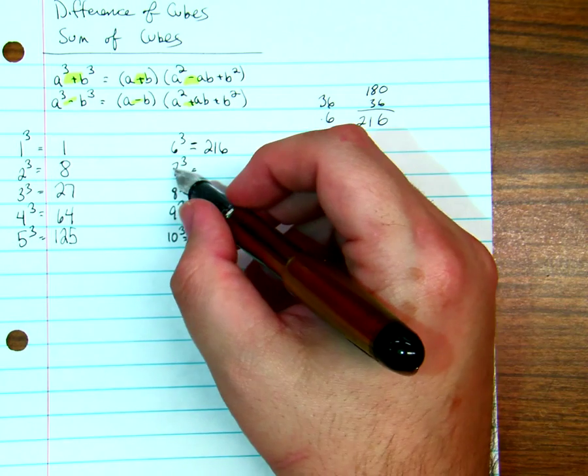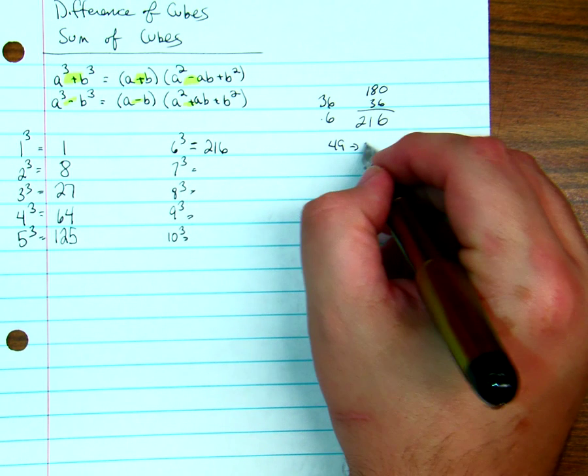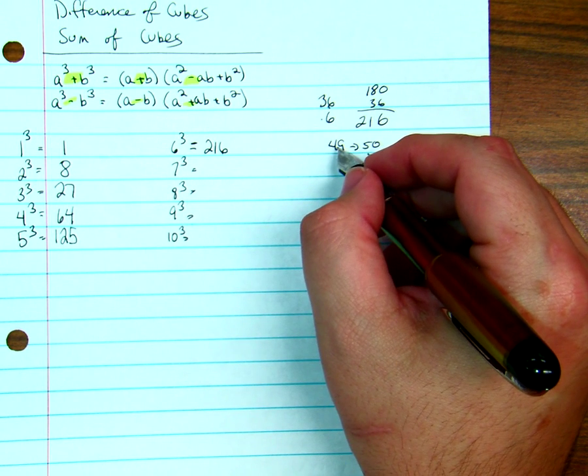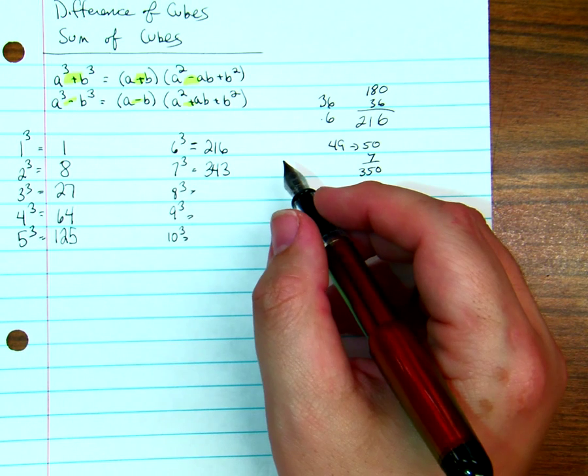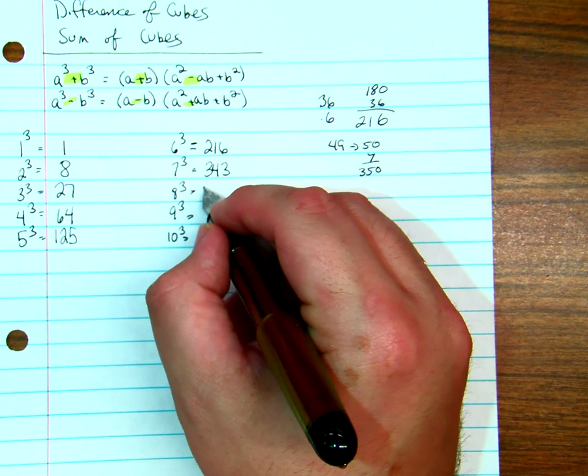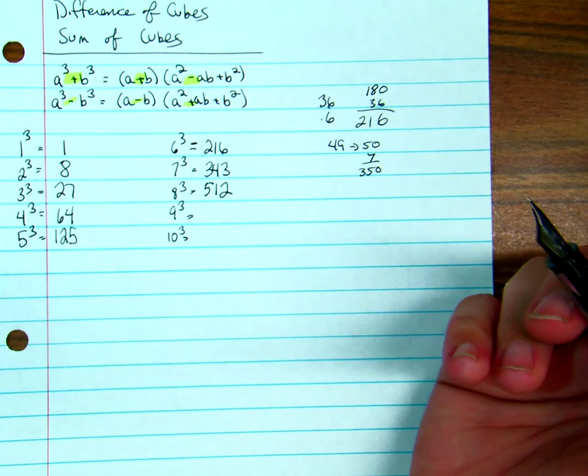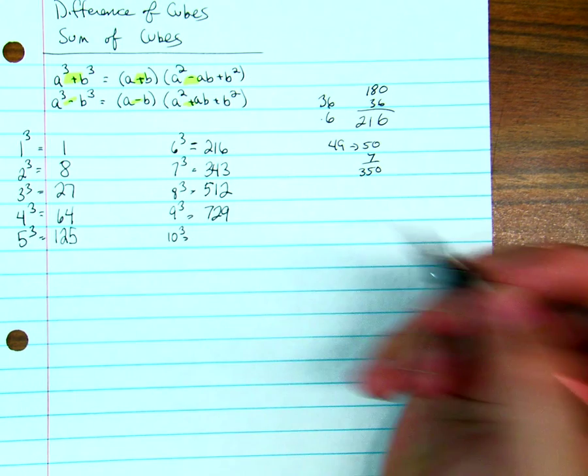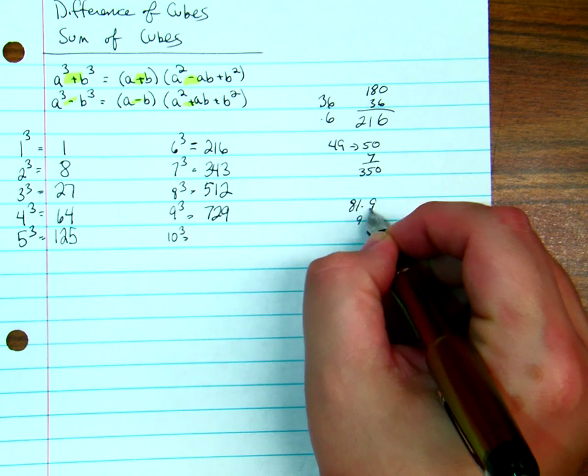7 times 7 is 49. If this was 50 times 7, it'd be 350, but I'm losing 1 7 times, so it'll be 343. 8, 64 times 64, so 512. Since it's even, it's not going to have an odd answer. 9, 729, because that's just 81 times 9. That's 9, and that's going to be a 72. And this guy's a 1,000.